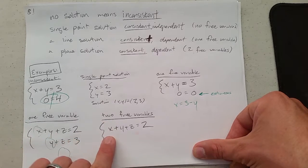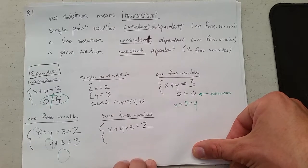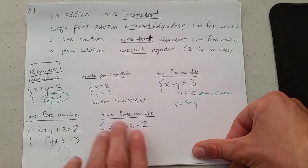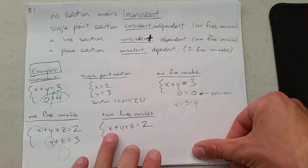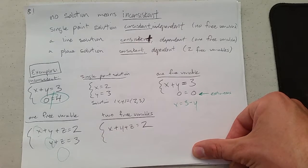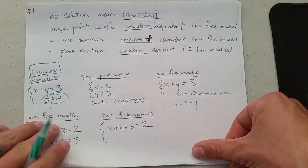Two free variables. We have no other equations here. It could have a bunch of 0 equals 0, but those wouldn't matter. Two free variables. If you picked any Z and any Y, I could tell you very easily what X needs to be. It would just be 2 minus the Y minus the Z that you picked. So this would have two free variables.